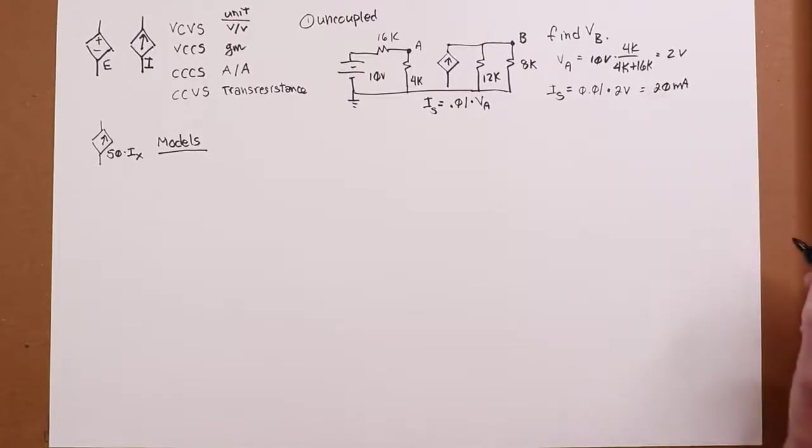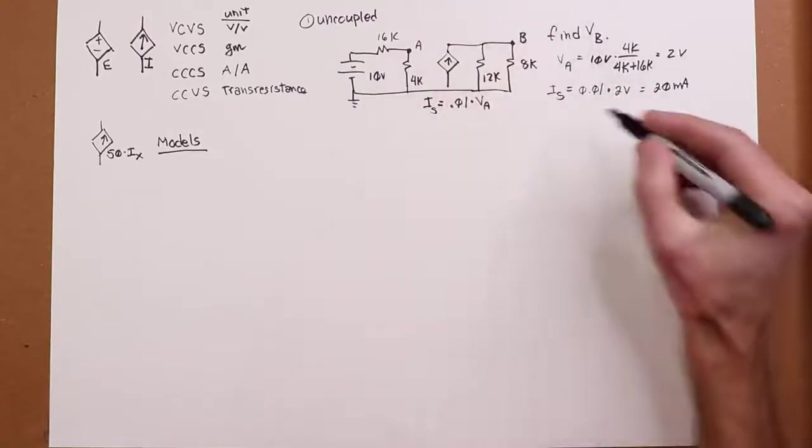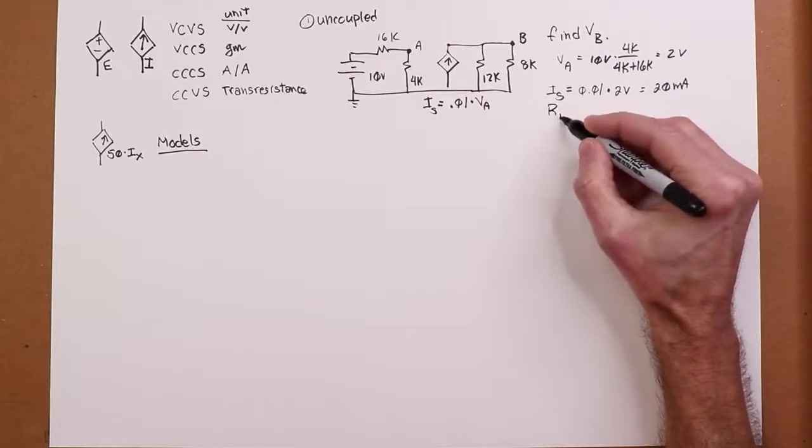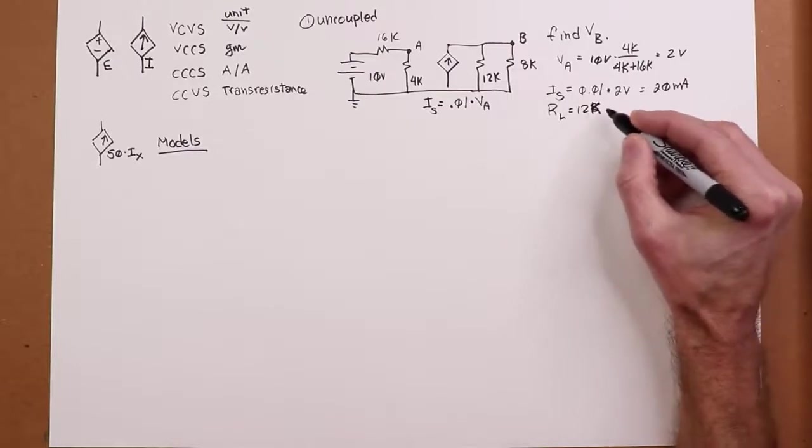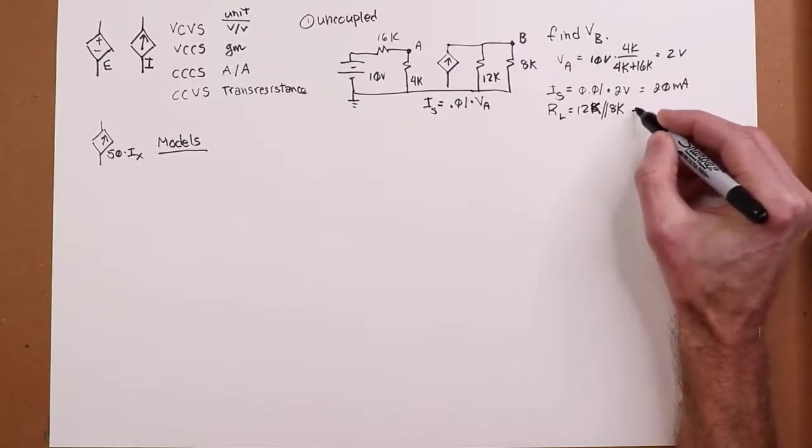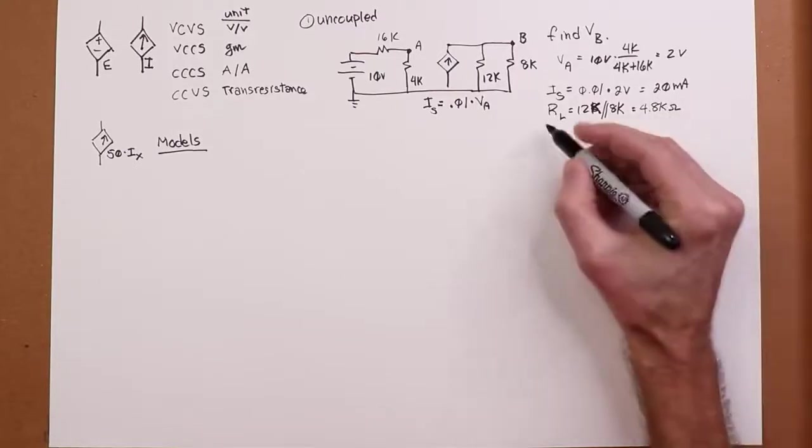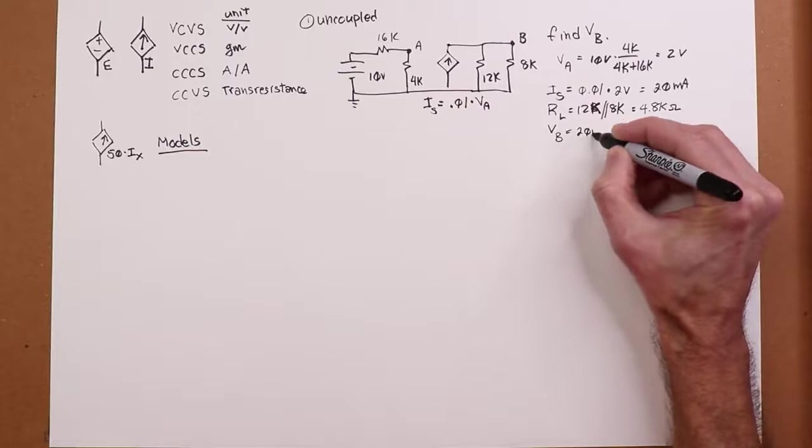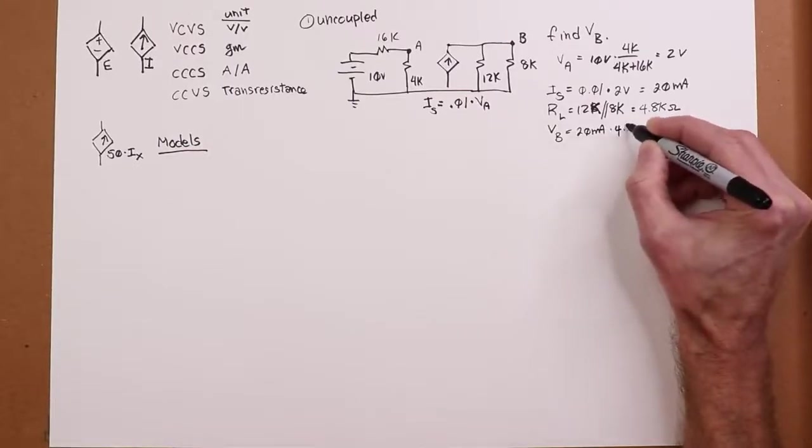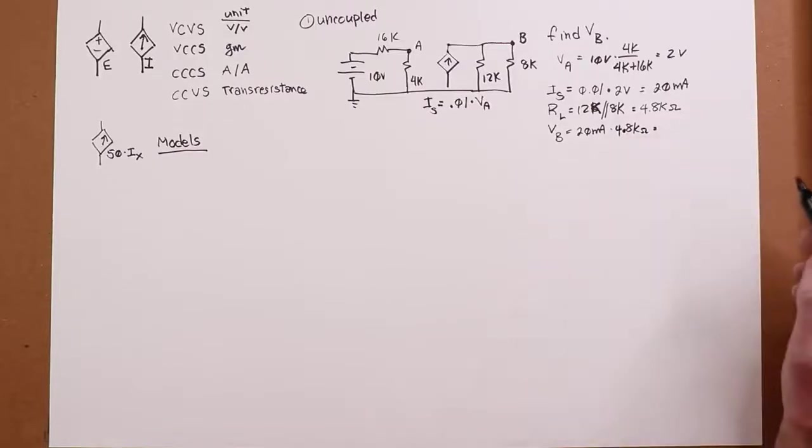So we would say this is perhaps 10 millisiemens. That would be the normal way of specifying that. Anyway, when we multiply out here, we find that we get 20 milliamps for the current, and now you can just take that current, if I'm trying to find VB, that feeds this parallel combo, so I can just find out what that parallel combo is. I'll just call it RL for our load. All right, so 12K in parallel with 8K is going to get us 4.8K, and that voltage VB, then, will just be 20 mills times 4.8K. K's mills cancel. 20 times 4.8. We're looking at 96 volts. Bingo. Done.